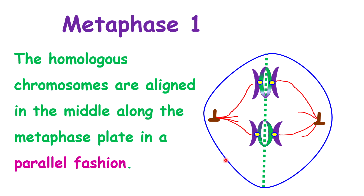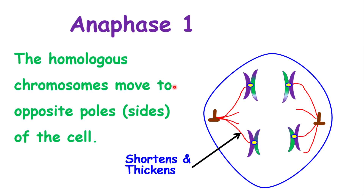After metaphase 1, we go into anaphase 1. In anaphase 1, the homologous chromosomes — similar chromosomes, and note the key word here is chromosomes, not chromatids — move to opposite poles or sides of the cell. To achieve this, the spindle fibers must become shorter and thicker. Each spindle fiber shortens and thickens, creating a pull on the chromosomes that draws them to opposite sides of the cell.